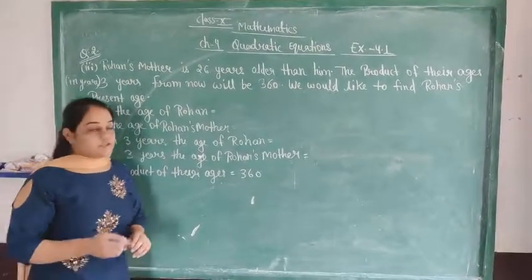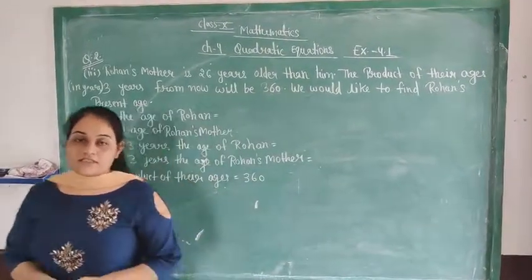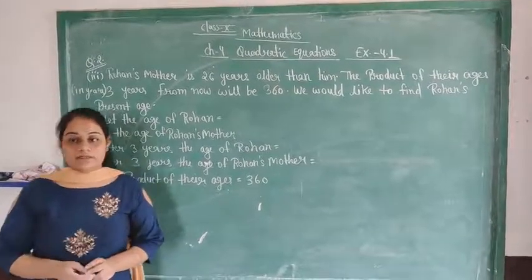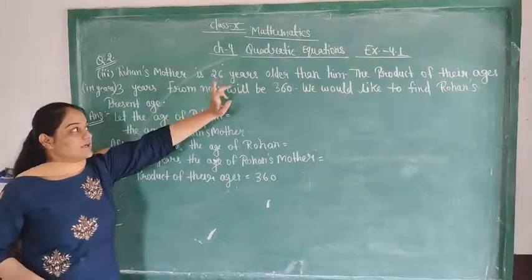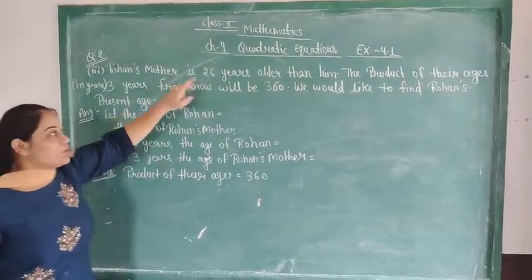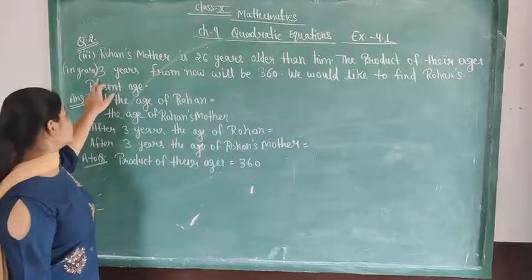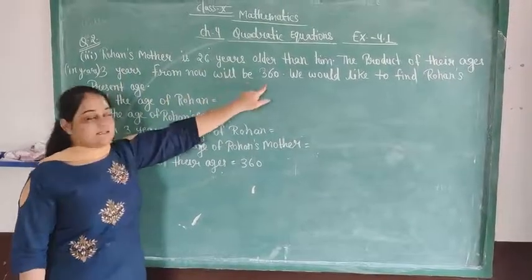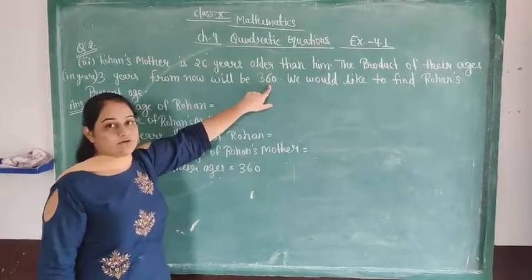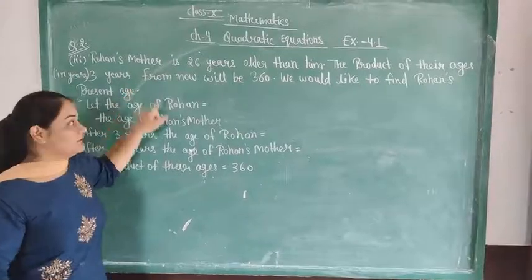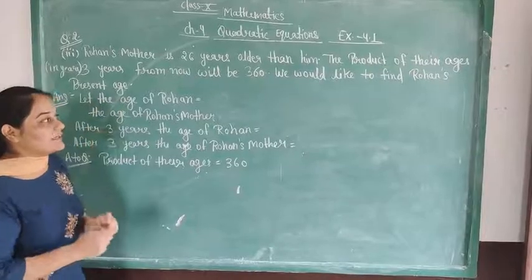Question No. 2 was that whatever question statement was given, we had a form of Quadratic Equations. Question No. 1st and 2nd, today we read question No. 3. Question No. 3 is that Roman's mother is 26 years older than him. The product of their age 3 years from now will be 360. We would like to find Roman's present age.